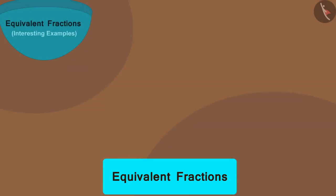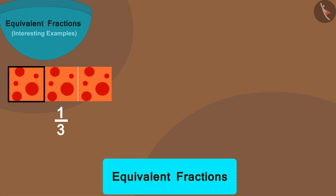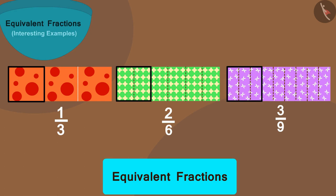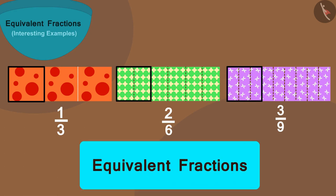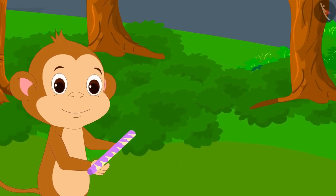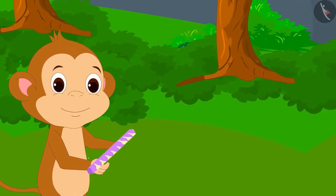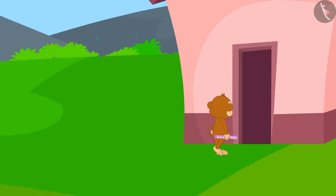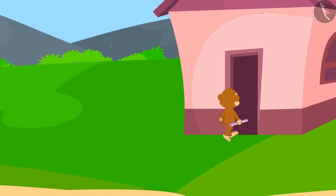In this way, one-third is equal to two-sixths is equal to three-ninths — all these are equivalent fractions. Babban took three-ninth part of Chanda's cloth and happily returned home.